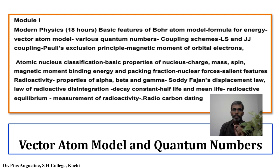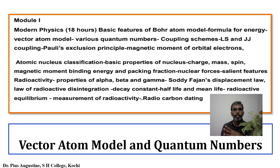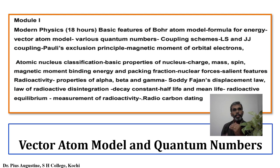Sommerfeld's theory was only partly successful in explaining the fine structure of spectral lines. The spectra of other elements are much more complex and Sommerfeld's theory failed in explaining these complex spectra. It also failed to explain the number of component lines and the relative intensities of the component lines. So today we move on to vector atom model and quantum numbers to account for the many difficulties in Sommerfeld's model and other models.